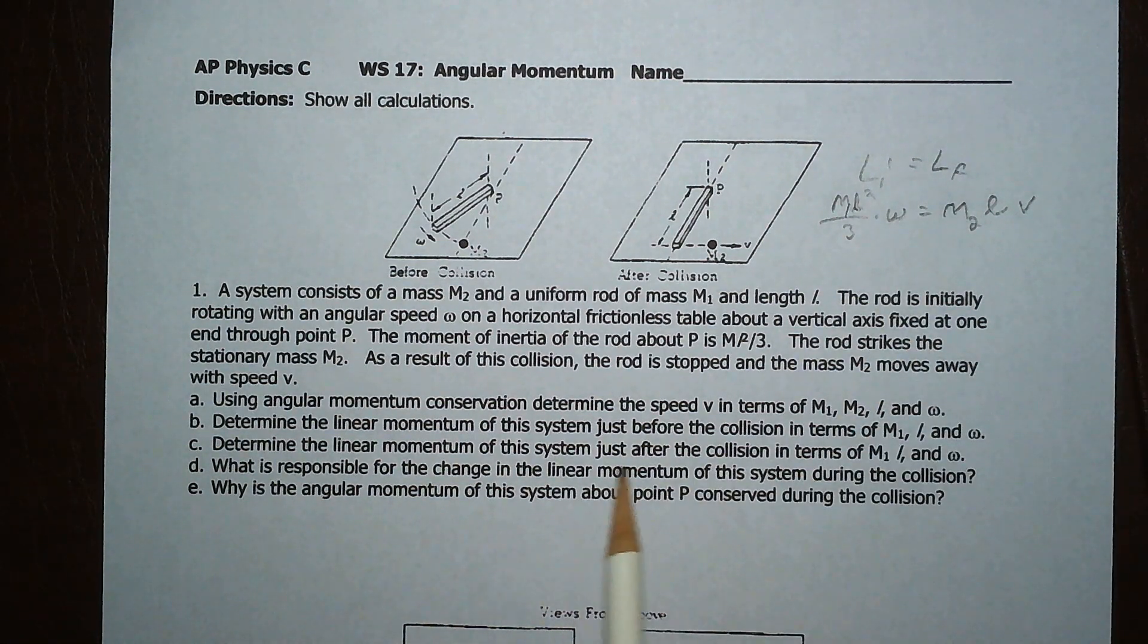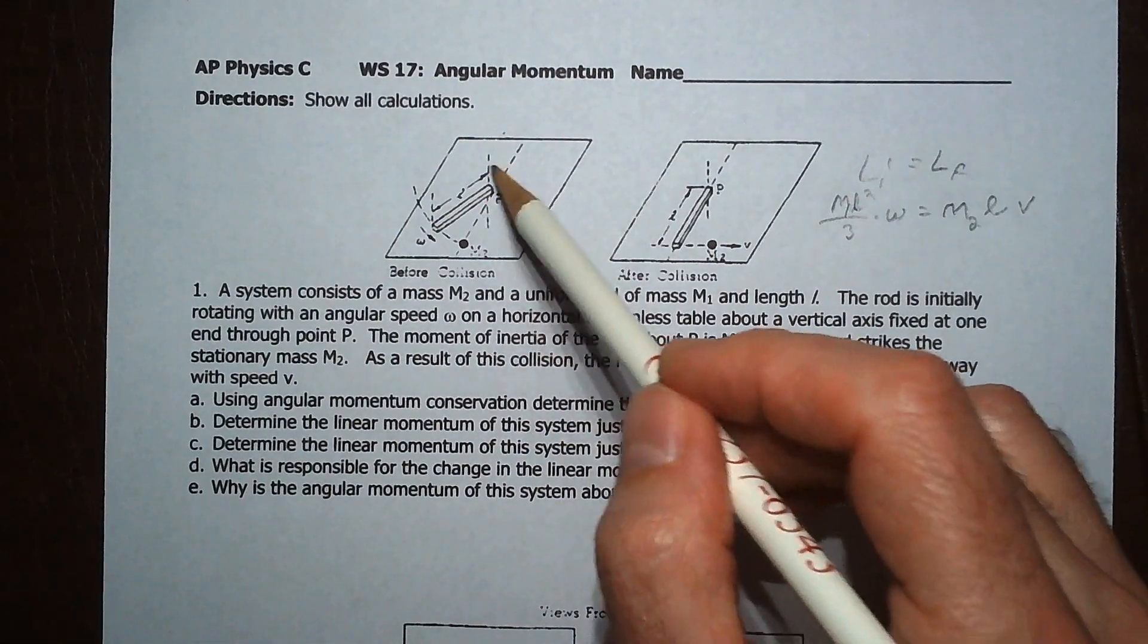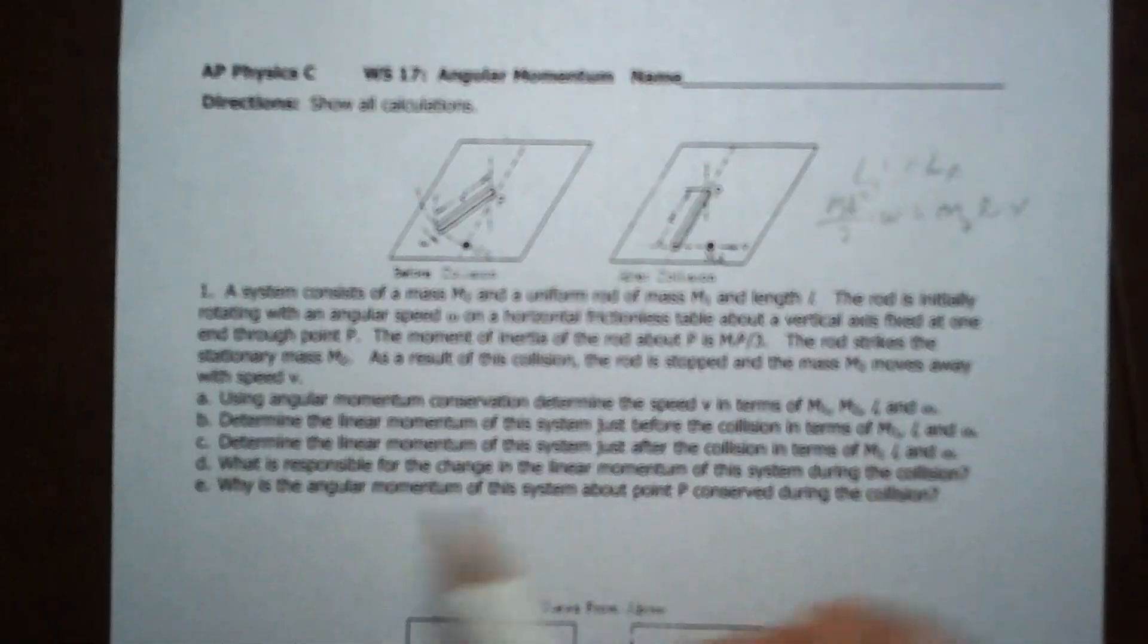To determine the linear momentum system before the collision, well there's nothing that has linear momentum because this is rotating, that's angular momentum, and that's not even moving, so it's zero. That's easy.